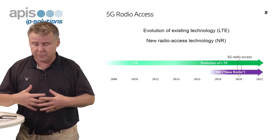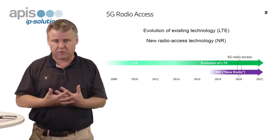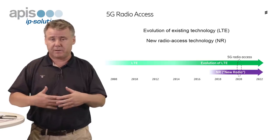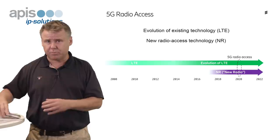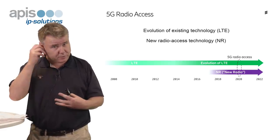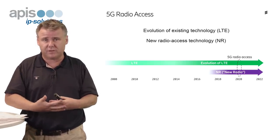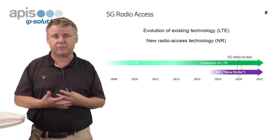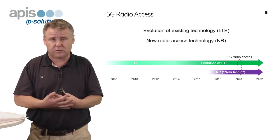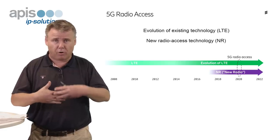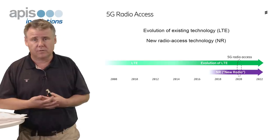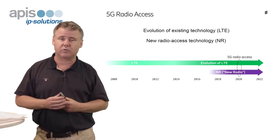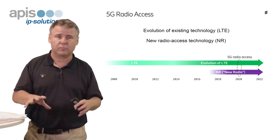5G is very much about supporting these new types of services, but many of these services will actually be provided by the evolution of technologies we have today. From that point of view, we would like to see 5G not as one specific interface solution, but as the overall radio access solution supporting all these new services. The evolution of LTE will be a very important part of that — the evolution of LTE is actually part of the overall 5G radio access solution. That said, many people associate 5G radio with the new 5G radio access technology NR, and that is what I'll focus on for most of this presentation.